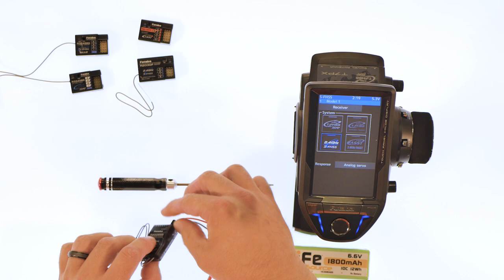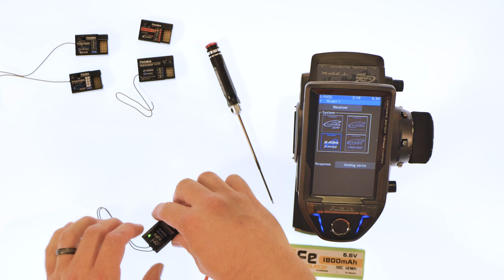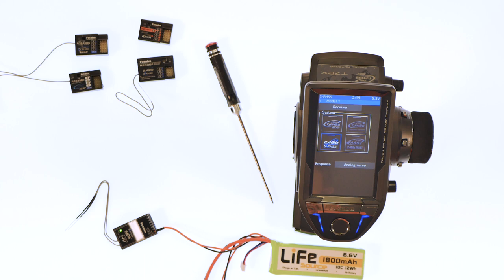Plug it in. Hit the button. And there it turns green. So just like the other SFHSS receivers you just push it until it turns green and you're ready to link. So that's how easy it is to link your receivers to your transmitter with various different types of receivers.